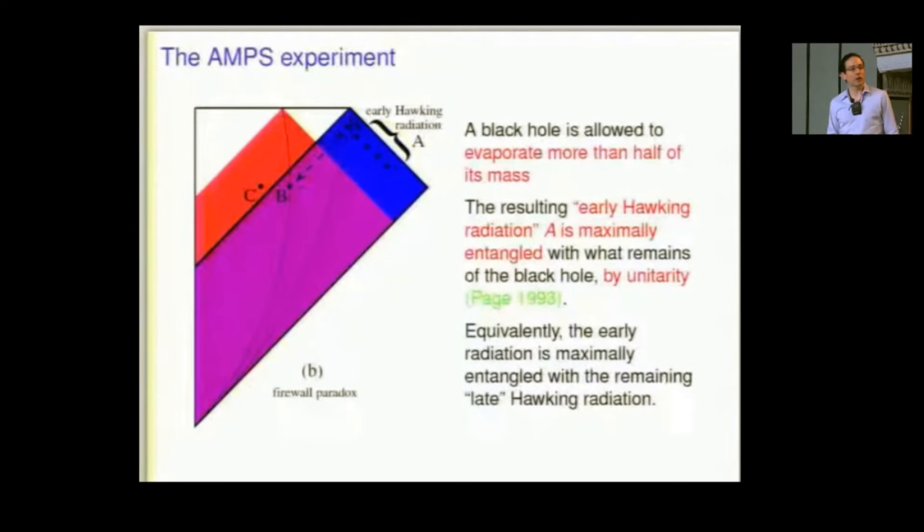And these black dots here, they're supposed to denote the early Hawking radiation. What we're doing here is we're waiting for the black hole once again to evaporate, just like in Preskill and Hayden. We let it evaporate half of its mass. But it's still supposed to be big compared to, you know, observer scales and Alice's size and so on. And so the early Hawking radiation that more than, let's say, 90% of whatever is already evaporated, that is maximally entangled with what remains of the black hole. Equivalently, it's maximally entangled with the remaining 10% that are still to come out of the black hole. The late Hawking radiation.